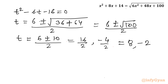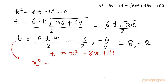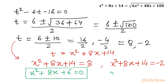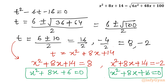Our substitution was t = x² + 8x + 14. So we write two equations: x² + 8x + 14 = 8, which gives x² + 8x + 6 = 0 (equation 1), and x² + 8x + 14 = −2, which gives x² + 8x + 16 = 0 (equation 2). We will solve them one by one.